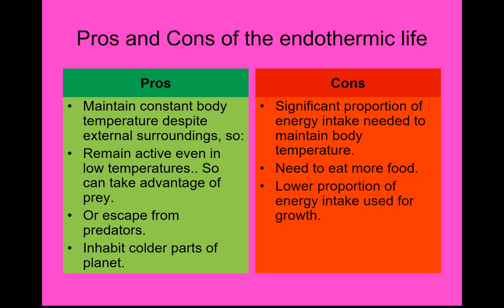However, there are significant cons. You have to use a significant proportion of your energy to maintain your body temperature, which means you have to eat more and be more active finding food. A lower proportion of the energy you take in is used for growth, so you may grow more slowly or need to eat much more to grow quickly. Because you have these complex homeostatic mechanisms, you are vulnerable to hyperthermia and hypothermia — you have a very narrow survivable range of core body temperature, unlike ectotherms whose core temperature can fluctuate wildly and they generally survive it.